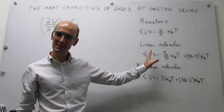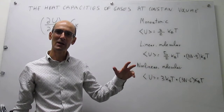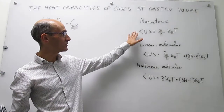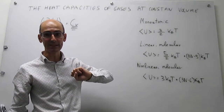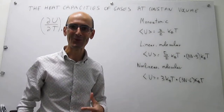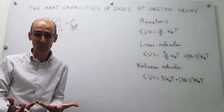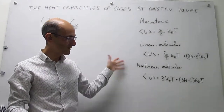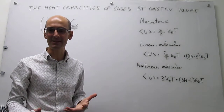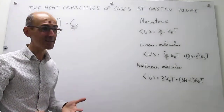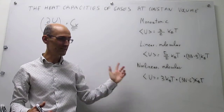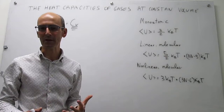These molecular gases contain contributions not only from translation, which is what the monatomic ideal gas has, but also rotation and vibrations. What we can then do is simply take these expressions to calculate an average heat capacity at constant volume for gases, by taking the first derivative of the internal energy expressions with respect to temperature.